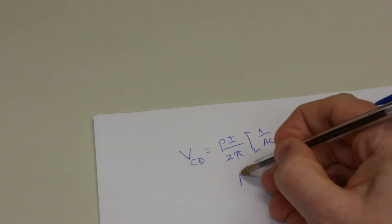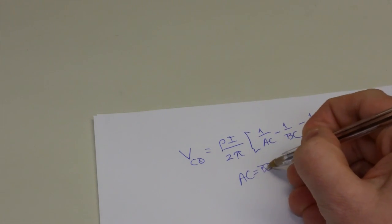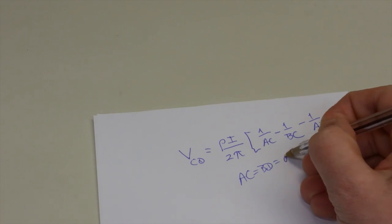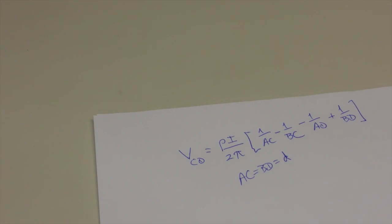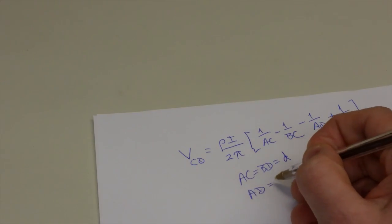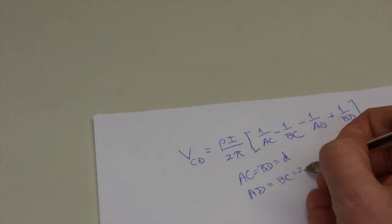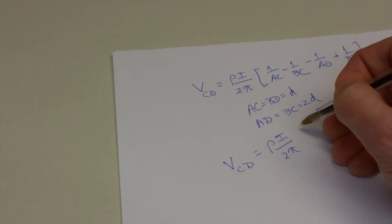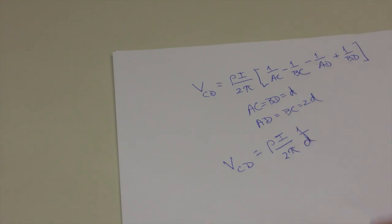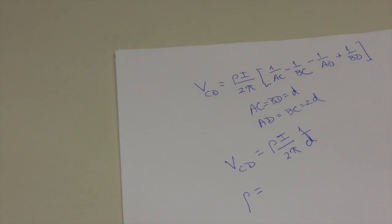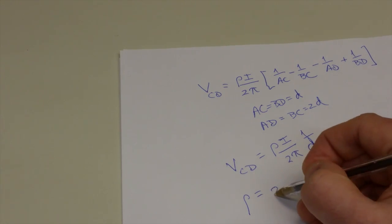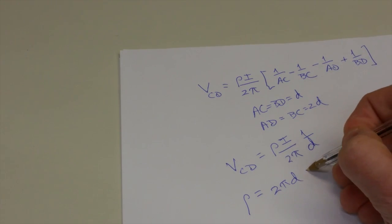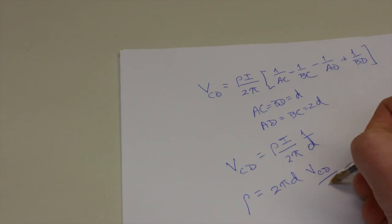And as we just said, AC is equal to BD is equal to a distance D, which in this case will be 18 inches. We won't plug that number in quite yet. And AD is equal to BC is equal to twice that distance. Once you do the algebra, it turns out to be I rho over 2 pi 1 over D. And if we invert that, then we see that the resistivity rho is equal to 2 pi D VCD over I.